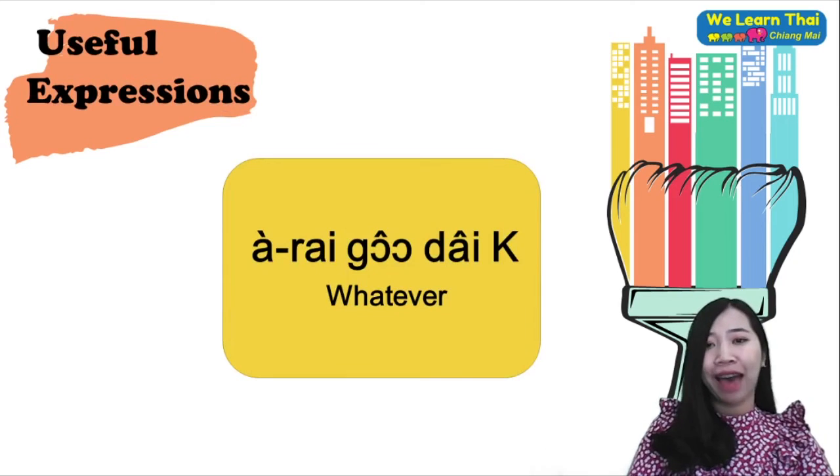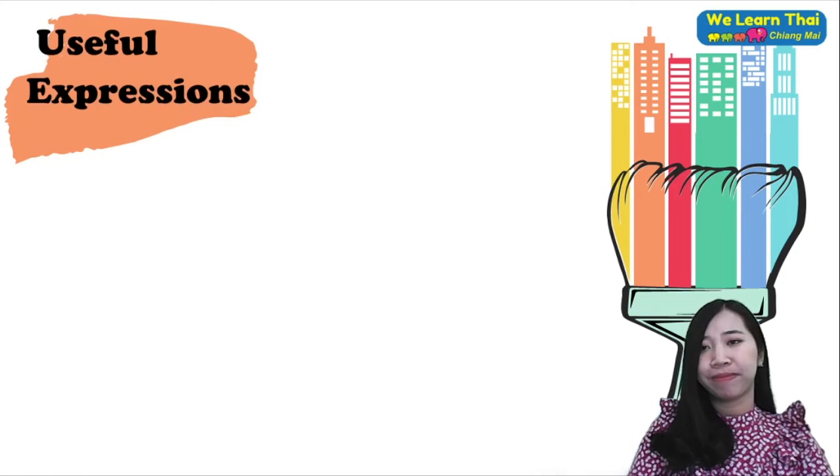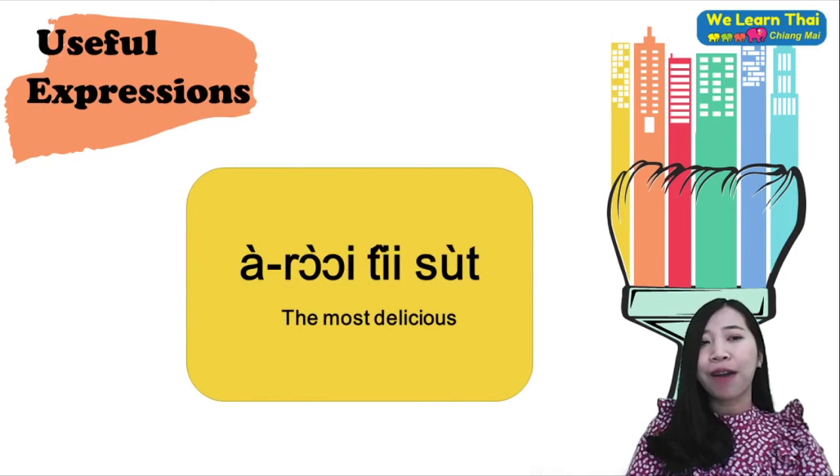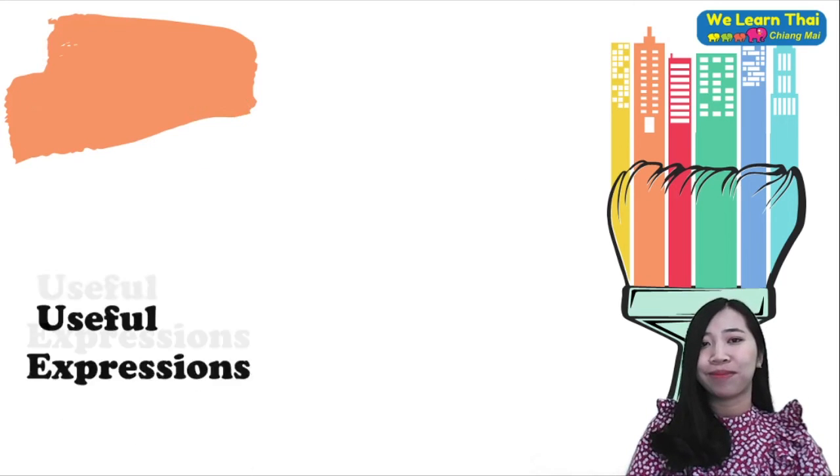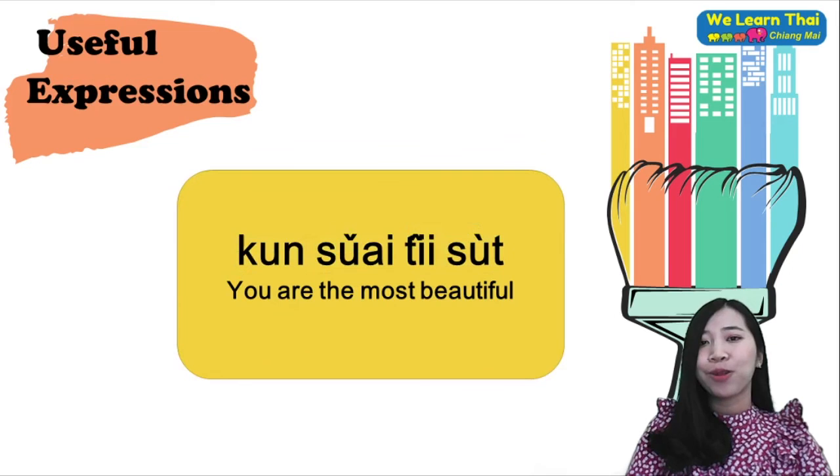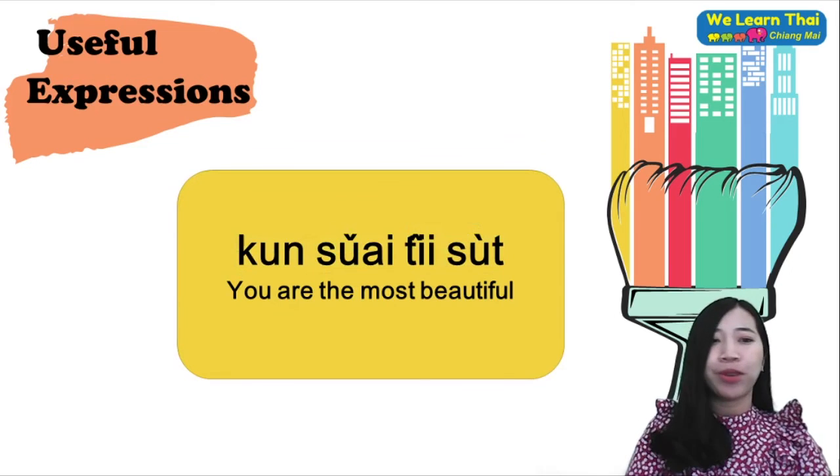Arai kho dai kha means whatever. Arai thi sut means the most delicious. Khun suay thi sut, you are the most beautiful.